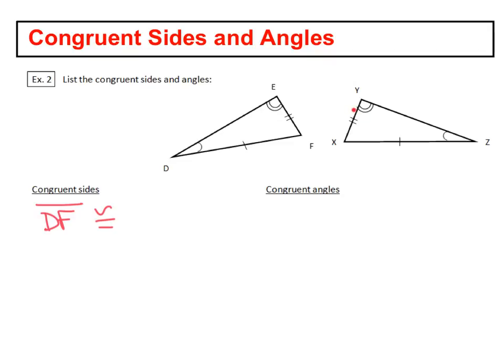So in the second triangle see how you've got two dashes and one dash? Well it's the one that's a one dash that's congruent to it. So DF is congruent to XZ and again remember it doesn't matter the order that you write those.